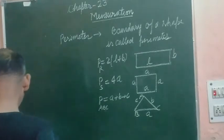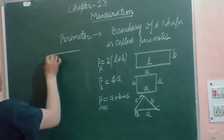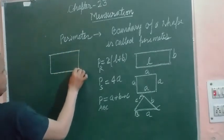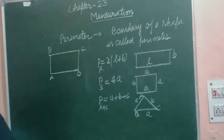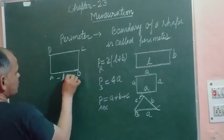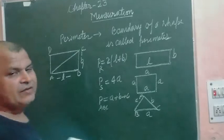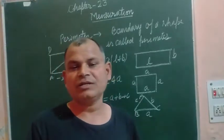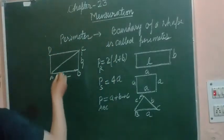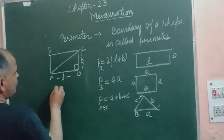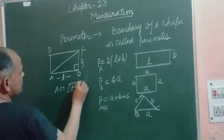Now, for a rectangle, how we find a diagonal. If we have a rectangle with length L and breadth B, the side which joins the opposite vertices of a rectangle is known as a diagonal. So the length of the diagonal, by using the Pythagoras theorem, we can find diagonal AC equal to square root of L squared plus B squared.